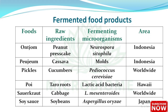Oncom — raw ingredient: peanut press cake, fermenting microorganism: Neurospora crassa/Neurospora sitophila, area: Indonesia. Pugio — raw ingredient: cassava, fermenting microorganism: mold, area: Indonesia. Pickles — raw ingredient: cucumber, fermenting microorganism: Pediococcus cerviciae, area: worldwide.